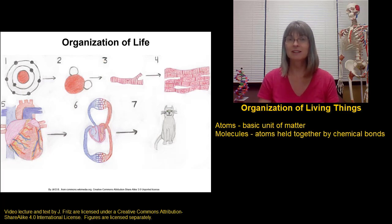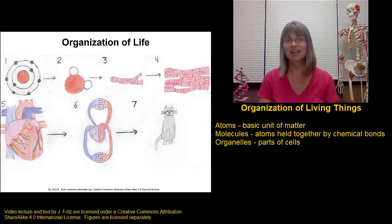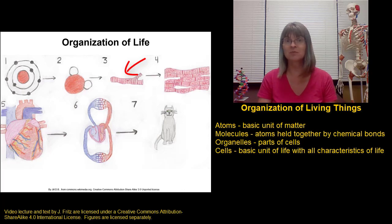Some molecules function fairly independently, but other molecules join together to form the parts of cells, or organelles. Things like ribosomes, membranes, or mitochondria are all parts of cells formed by molecules working together. Once we get all of those different organelles working together, we have a cell. A cell is called the basic unit of life because it's the smallest unit that can carry out all of the functions of living things.